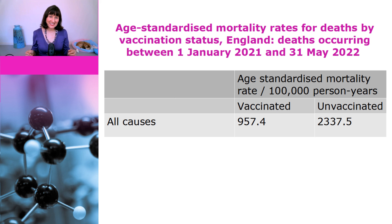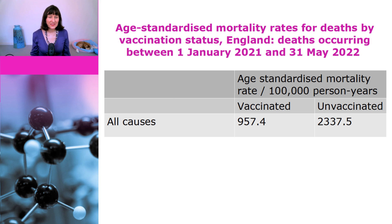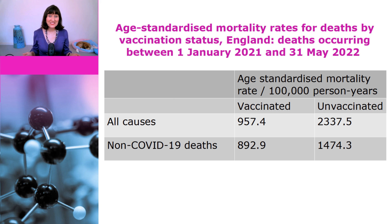However, this does include COVID deaths, so maybe it isn't a fair comparison because we know that the COVID vaccines are going to reduce COVID deaths. So let's have a look at non-COVID deaths. Here we see that the age-standardised mortality rate is 892.9 per 100,000 person years for the vaccinated, compared to 1,474.3 for the unvaccinated. So even when we are just looking at non-COVID deaths, the unvaccinated are still more likely to die, which is of course the exact opposite of what you would see if the vaccines were in fact leading to excess deaths.